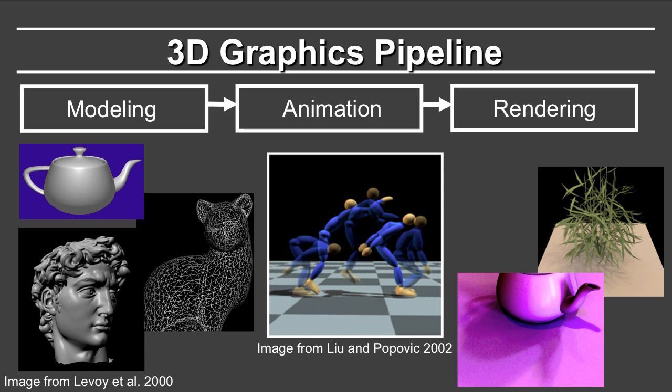First, we introduce the notion of the 3D graphics pipeline. The graphics pipeline consists of three stages: modeling, animation, and rendering. Modeling is the process of creating geometric models of objects we're interested in. This could be a simple model like a teapot, a complicated mesh like a cat sculpture, or a 2 billion polygon mesh of Michelangelo's David scanned by Professor Lavoie and collaborators.